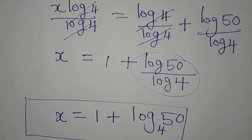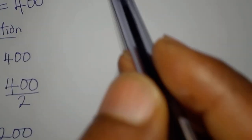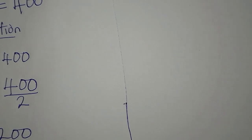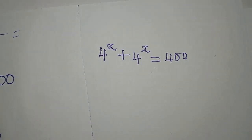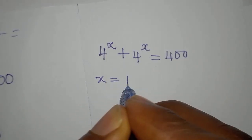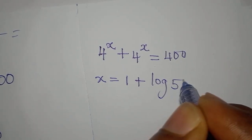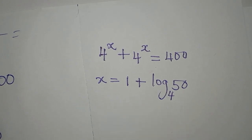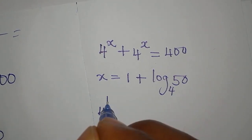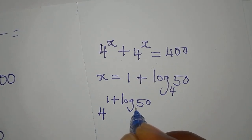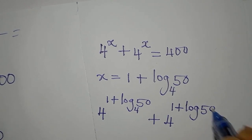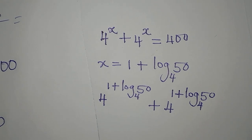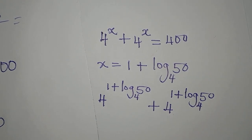Now let's verify our result. The original equation is 4 to the power of x plus 4 to the power of x equals 400, and our value of x is 1 plus log 50 to base 4. Substituting in, we have 4 to the power of (1 plus log 50 to base 4), plus another 4 to the power of (1 plus log 50 to base 4). Will this give us 400?